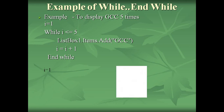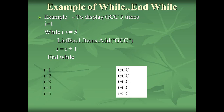i is initialized to 1 and the condition is tested. If the condition is true, the block gets executed, so 'gcc' is added. i is incremented and becomes 2. Condition is true since 2 is less than 5, so gcc is added into the listbox again. This process continues up to i equal to 5. When i reaches 6, the loop is terminated.